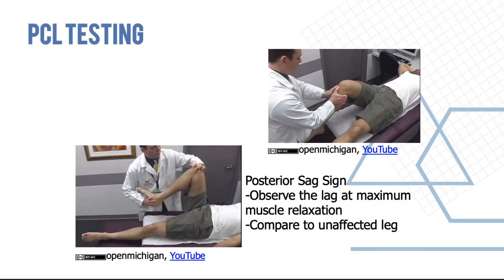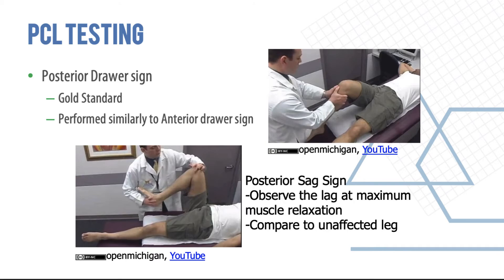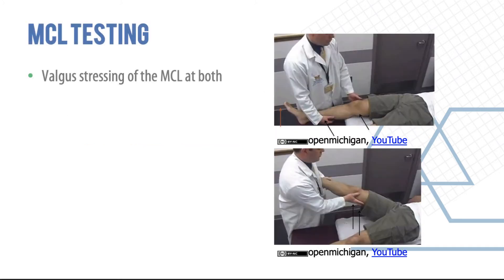PCL testing is essentially the opposite of ACL testing. Flex the knee to 90 degrees, observe the sag at maximum muscle relaxation, and compare to the unaffected leg. In the posterior drawer test, the same position is used but force is exerted posteriorly — trying to push the tibia back on the femur — compared to the anterior drawer test where you bring the tibia forward. This is the gold standard for PCL testing. Always compare to the other leg. For MCL, exert a valgus force at both zero and 30 degrees — the 30-degree position removes stabilization provided by the cruciate ligaments, allowing isolated MCL testing.